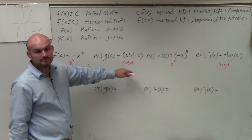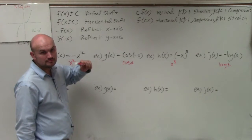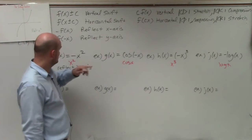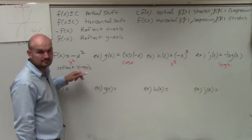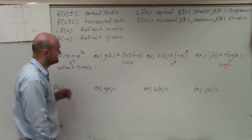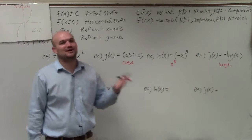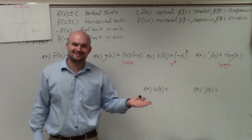With negative x squared, the reflection is over the x-axis. So you talk your way through it — that's perfect.